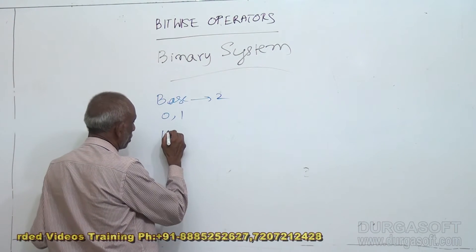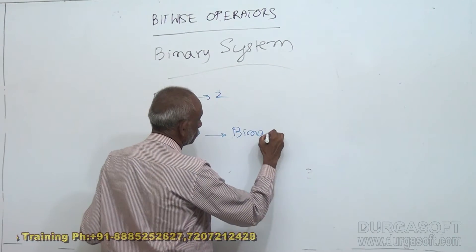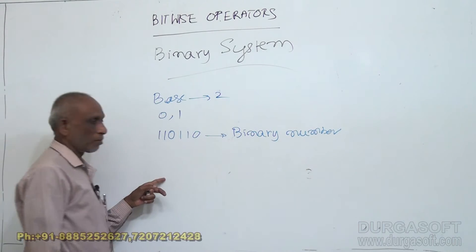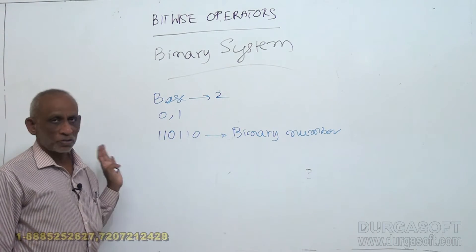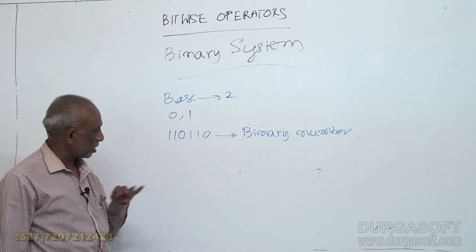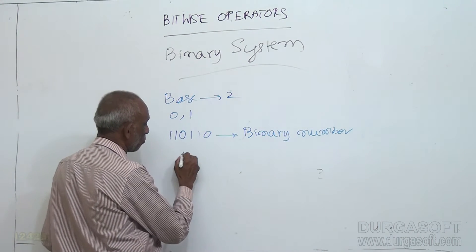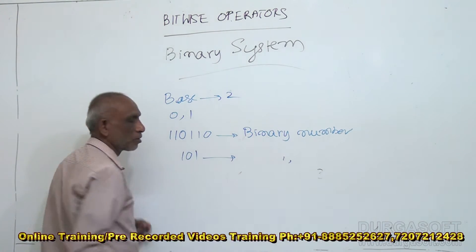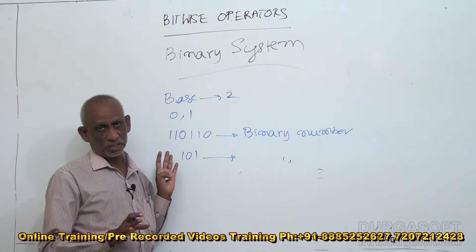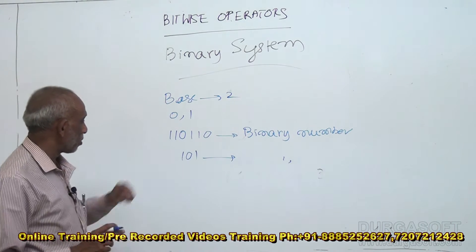So if I say 1 1 0 1 0 1, something like that, this is a binary number. One more example: 1 0 1, this is also a binary number. Binary numbers will have only 0s and 1s in them. There is no other digit because the base is 2, so the numbers are 0s and 1s.